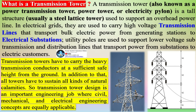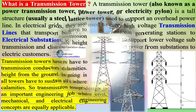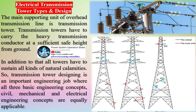In electrical grids, they are used to carry high-voltage transmission lines that transport bulk electric power from generating stations to electrical substations. Utility poles are used to support lower-voltage sub-transmission and distribution lines that transport power from substations to electric customers.